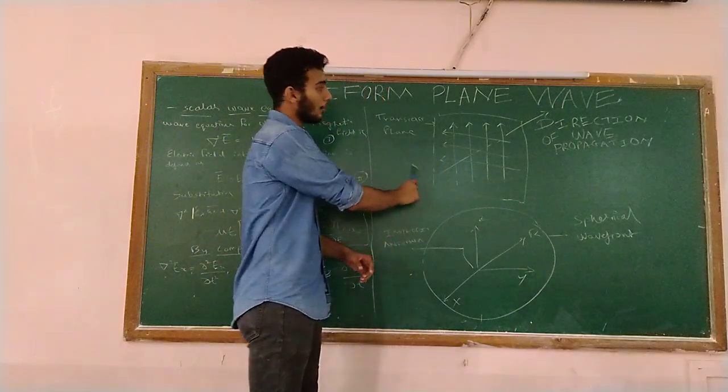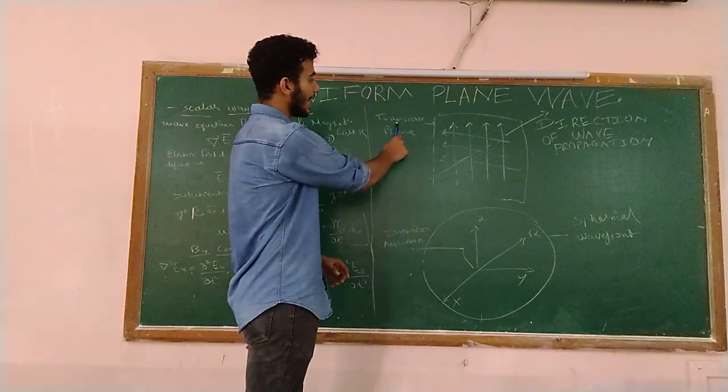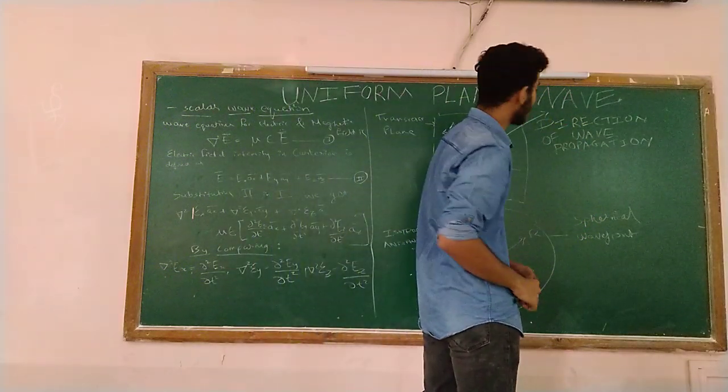So this is the diagram of a Uniform Plane Wave. Here you can see a transverse plane and this is the direction of propagation.